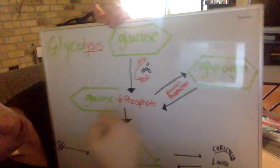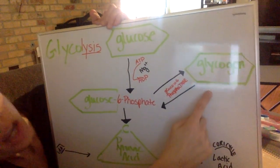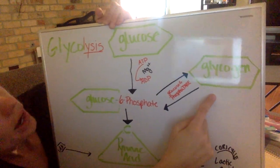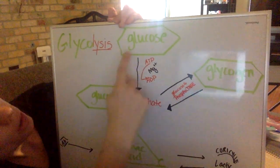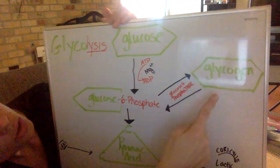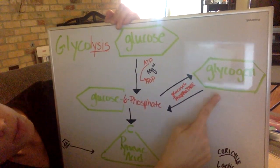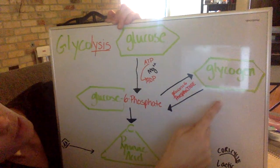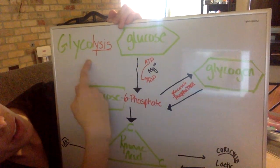We also can get this glucose 6-phosphate from glycogen. Glycogen is our storage form of glucose. We can go from glucose to glycogen. This is a reversible reaction. If we're wanting to break down glycogen, like in glycolysis,